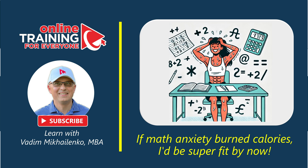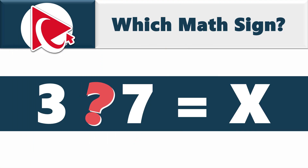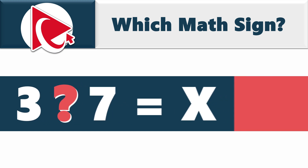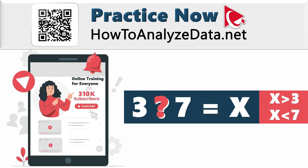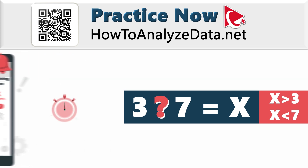Your mission is to find a special symbol to put between 3 and 7. This magical symbol should make a number that is more than three but less than seven. I have full confidence that you can solve this challenge by giving yourself enough time to think about it.